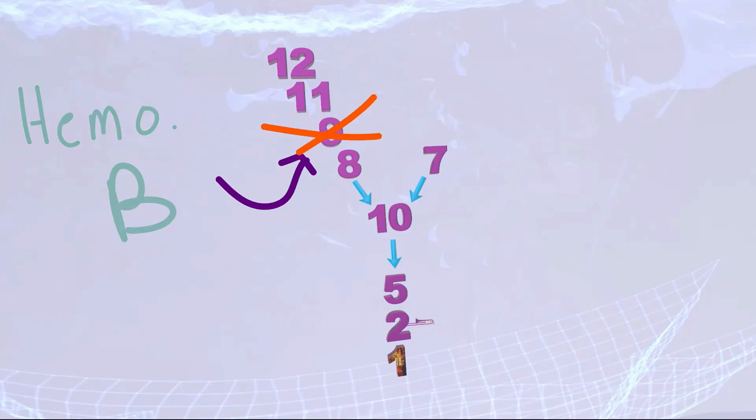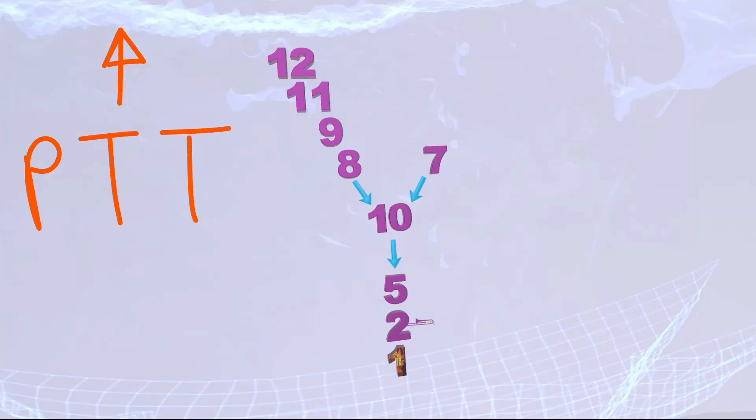I'm going to use the word benign to help me remember this: B9, benign. Hemophilia B is a deficiency of factor 9. In hemophilia C, there's a deficiency of factor 11, which again is part of the intrinsic pathway. So in all of these conditions, only the PTT will be elevated and not the PT.